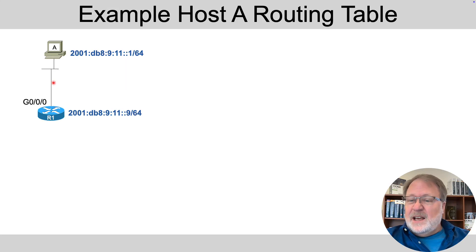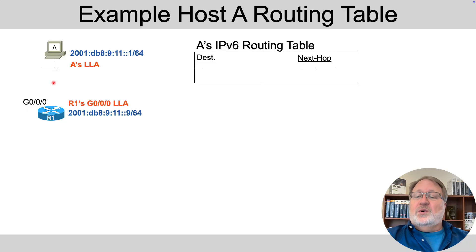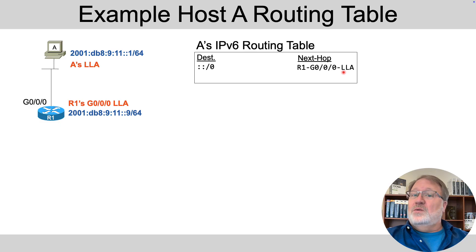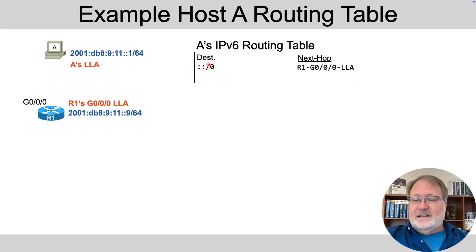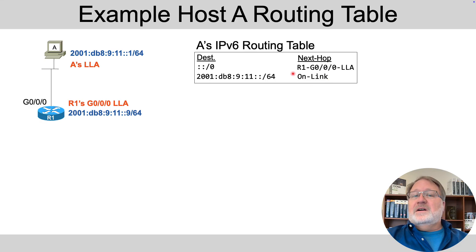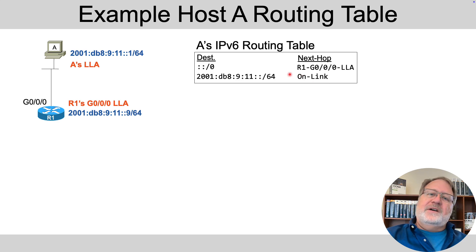What does host A's routing table look like? It's going to have a default route designated by double colon slash zero — an important factoid to recognize. Additionally, the router's link local address — not global unicast address — will be listed as the host's next-hop address for that default route. The host will also learn prefixes from the router. There's no next-hop router for the prefix route because it's local — a connected route — so there'll be a designation that this is a route to an on-link prefix; communicate directly with any hosts that match this prefix.